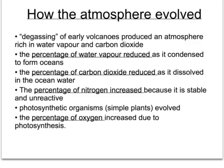In summary, the early atmosphere was produced by the degassing of volcanoes, making an atmosphere rich in water vapour and carbon dioxide. Water vapour reduced when the Earth cooled and condensed to form the oceans, and carbon dioxide also reduced when it dissolved into that ocean water. Nitrogen increased because it was made from ammonia in the atmosphere and, being stable and unreactive, built up to today's level of 78%. Photosynthetic organisms then evolved in the oceans, converting carbon dioxide into oxygen, which increased due to photosynthesis.